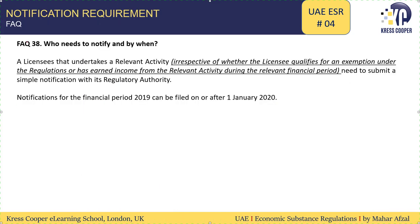Frequently Asked Question number 38 mentions the same thing: a licensee who undertakes a relevant activity is subject to notification, irrespective of whether the licensee qualifies for exemption or has earned income. So a licensee conducting a relevant activity — even one exempt from ESR or one that has not earned any income from the relevant activity — is subject to notification.